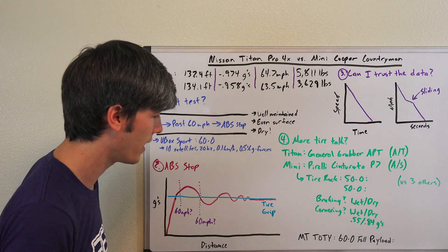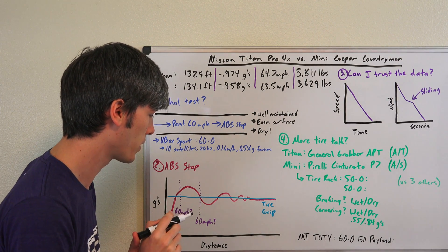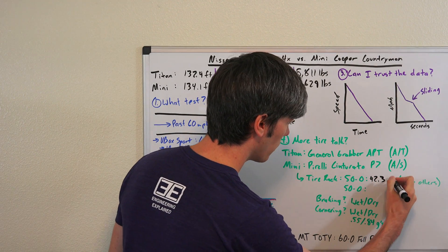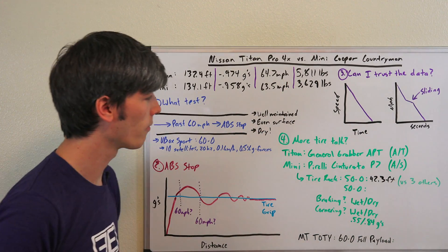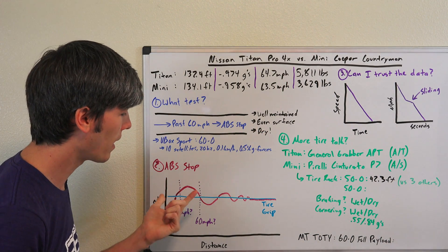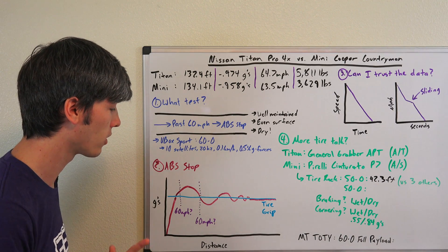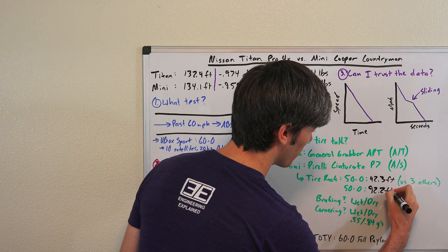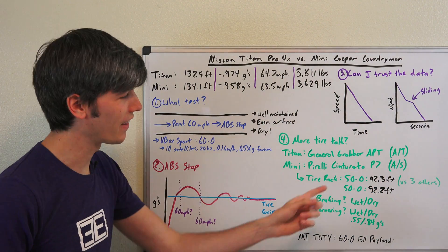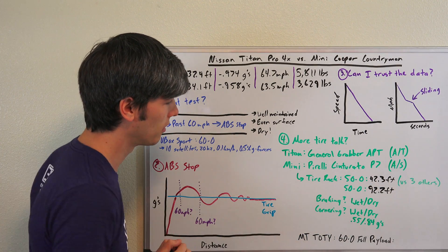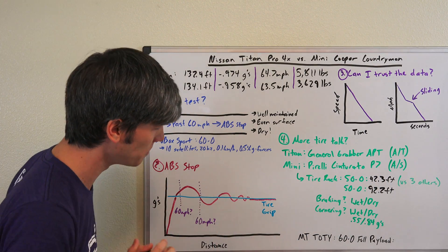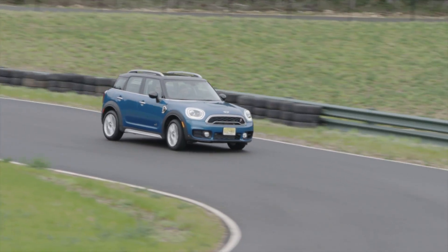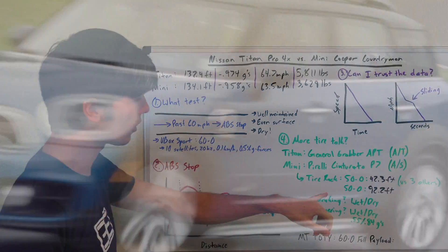Tire Rack coincidentally had some testing on this Pirelli tire in a BMW 328i. They had a 92.3 foot stopping distance from 50 miles per hour. I looked at my data, my 50 to 0 in the Mini Cooper on the same tires from 50 miles per hour was 92.2 feet, so incredibly close and that gave me a lot of confidence in the data.